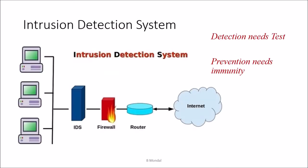Here is how an intrusion detection system looks. These three systems are in a private network or LAN. When someone connected to the internet accesses these private systems, the request comes through a router, then a firewall, then the IDS (intrusion detection system), and finally reaches the private systems.